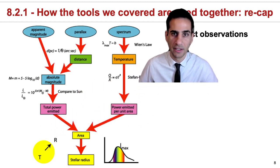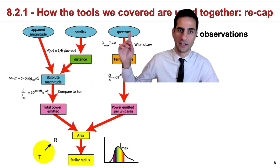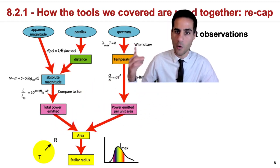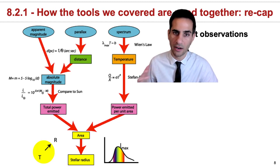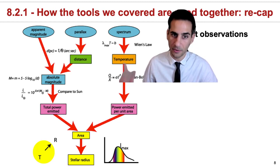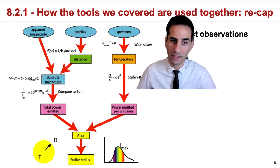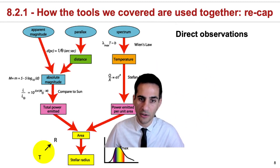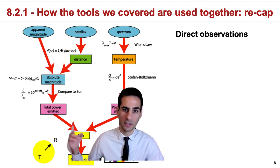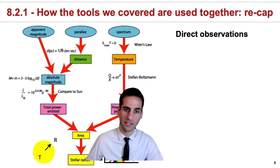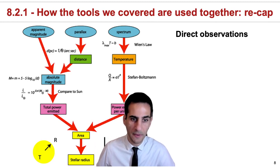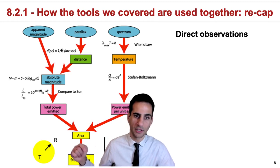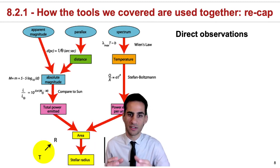On the other hand, by taking a spectrum and using Wien's law, or by calculating a color, you can estimate the temperature. This allows you, when combined with a total luminosity, to get a measurement of the area of the star and therefore to essentially know how big the star is.